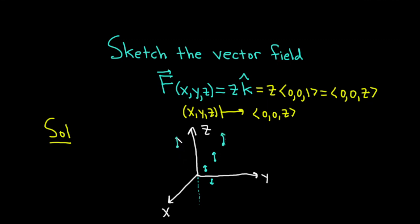So up here, the vectors are bigger. And then the closer you get here, the smaller the vectors get. And once you get down here to the negative z-axis, the vectors go down.